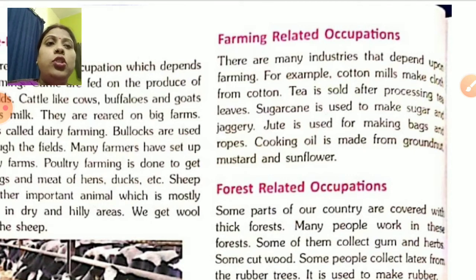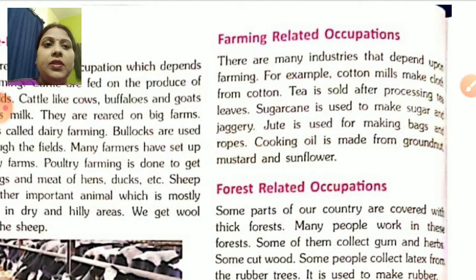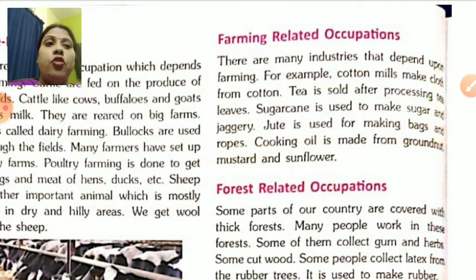Jute is also used for making bags and ropes. Cooking oil is made from groundnut, mustard, and sunflower.